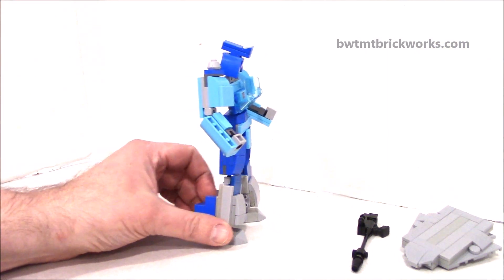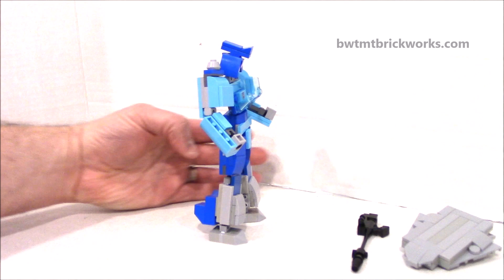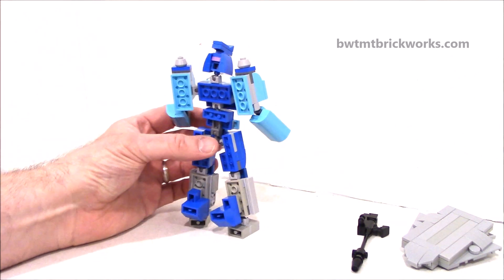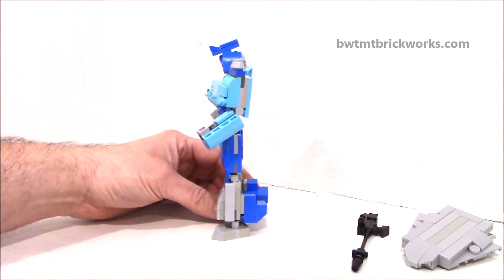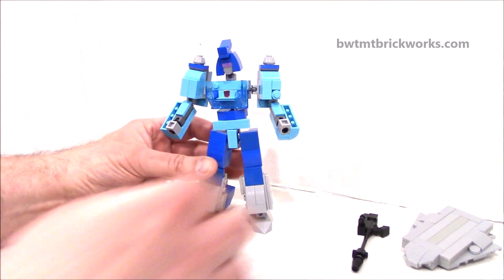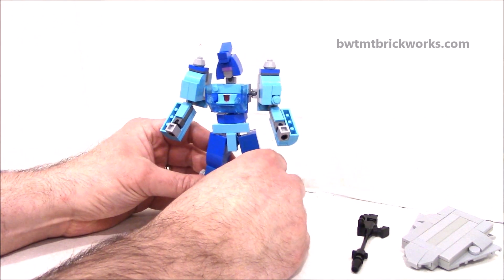You can see him here in his robot mode. It's pretty cool, pretty thin and lanky because he should be, because he's supposed to be speedy. That's kind of the look we were going for. He's got ball joints everywhere, so you can do some nice poses.